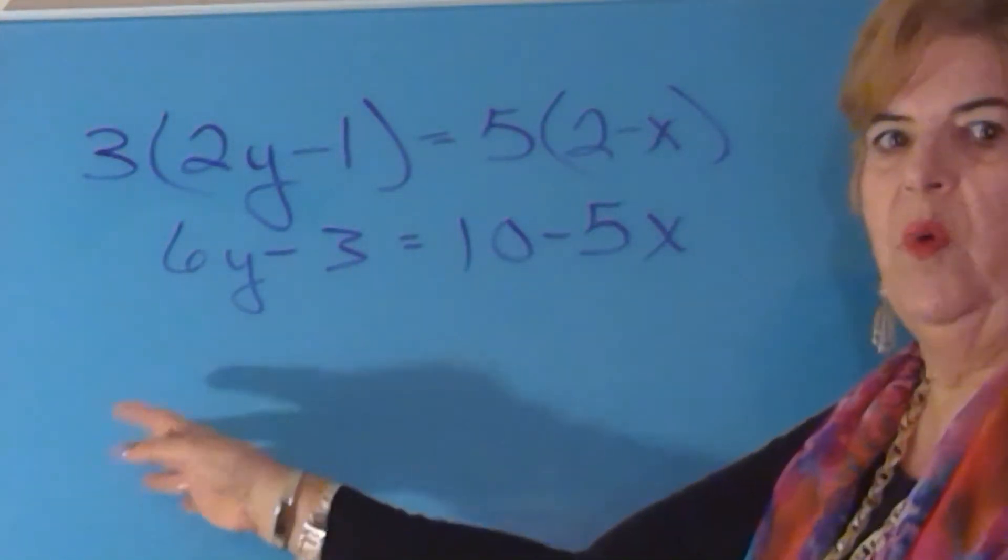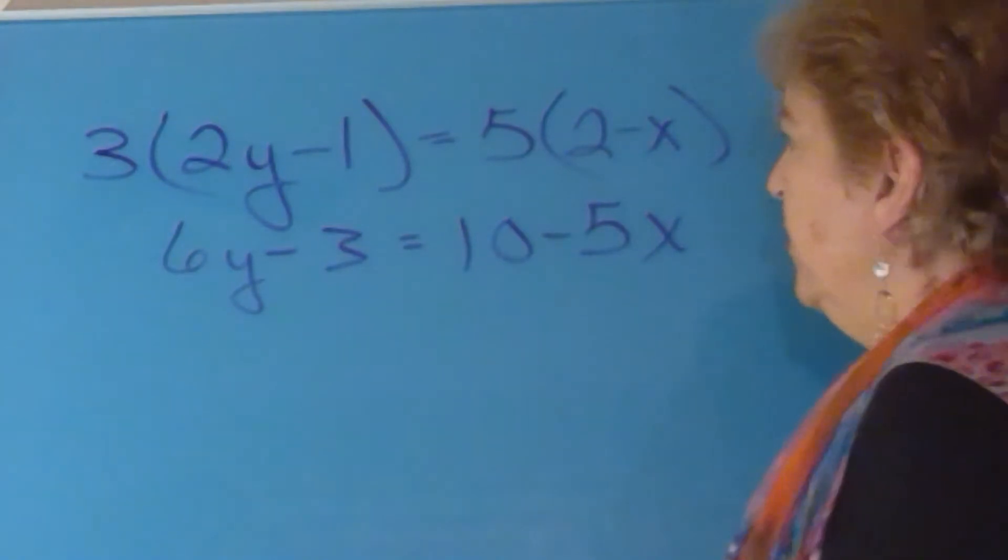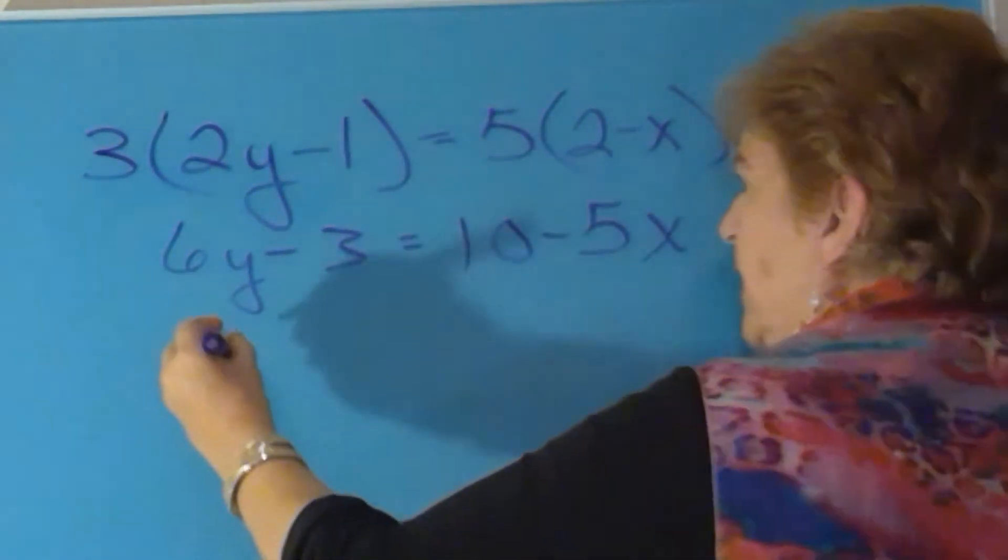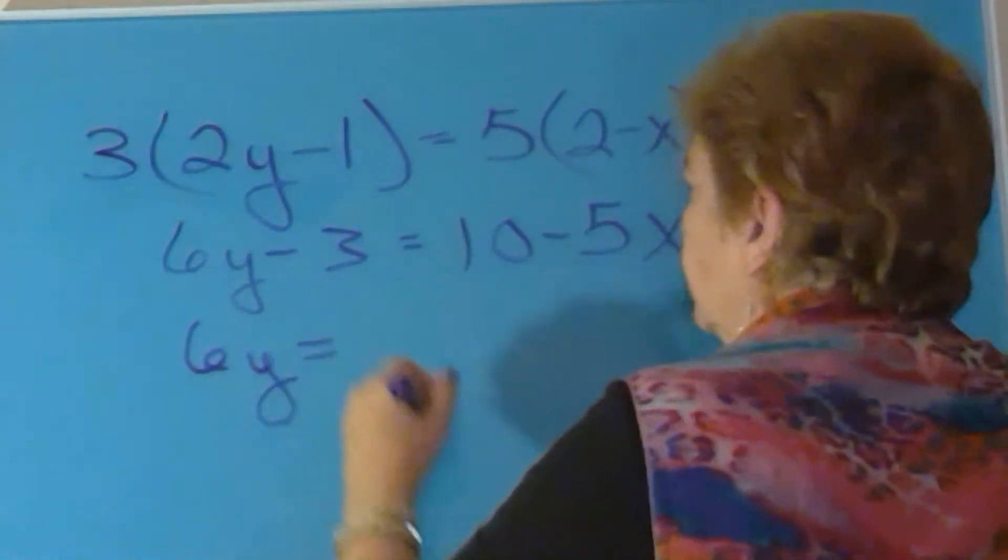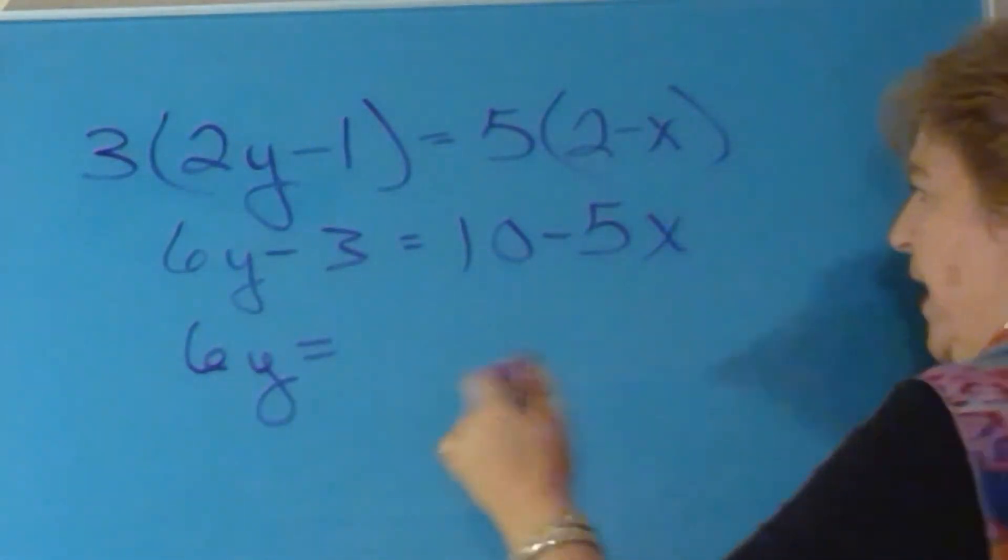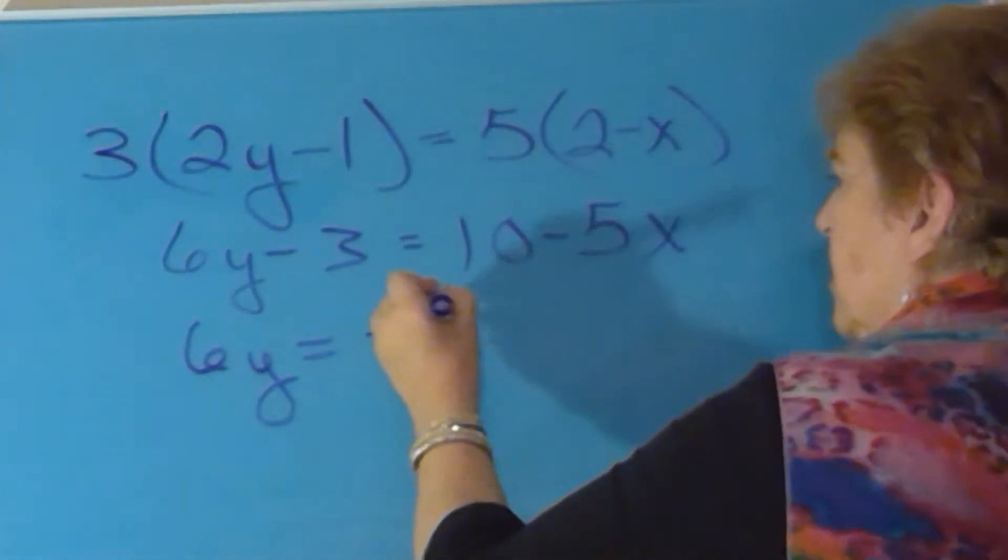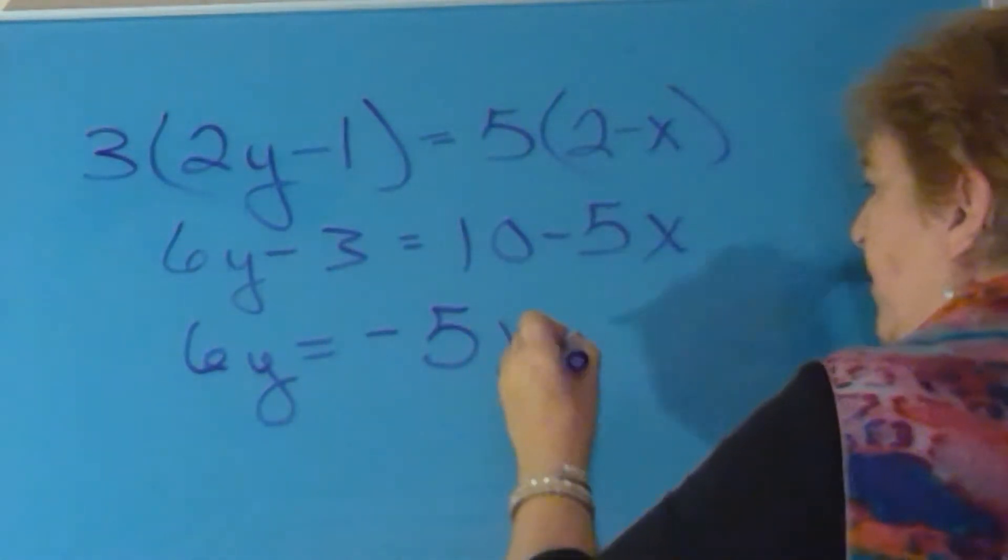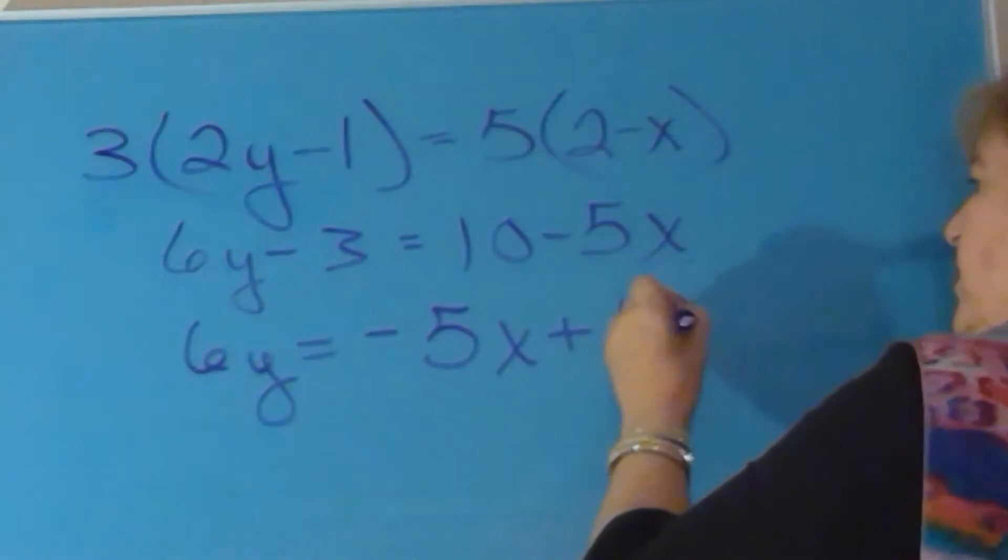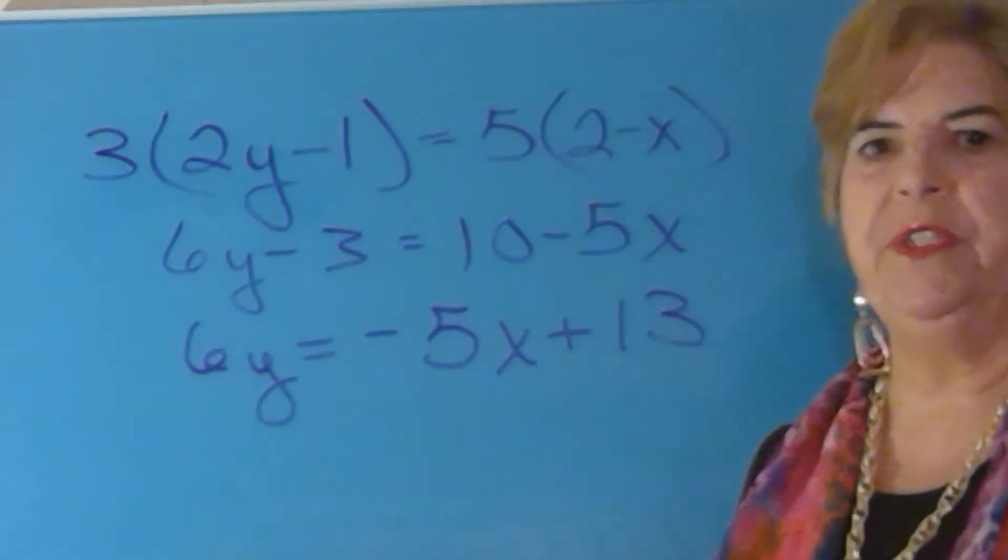You want the y's on one side and everything else on the other. So if I go ahead and add three to both sides, and I'm going to put the x term first. So you have a minus five x. And when you add three, ten plus three gives you 13.